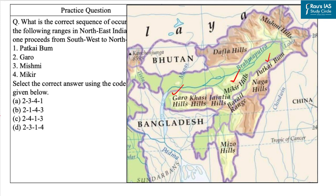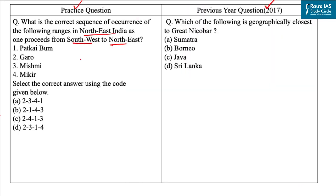Next is Patkaibam — a series of mountains on the Indo-Myanmar border falling in the northeastern states of Arunachal Pradesh, Nagaland, and upper Burma region of Myanmar. The last is Mishmi Hills, located at the northeastern tip of India in northeastern Arunachal Pradesh. These hills occur at the junction of the northeastern Himalayas and Indo-Burma ranges. So proceeding from southwest to northeast: Garo, then Mikher, then Patkaibam, and lastly Mishmi. Our correct answer is Option C — 2, 4, 1, 3. The answer to the previous year question is Option A — Sumatra.